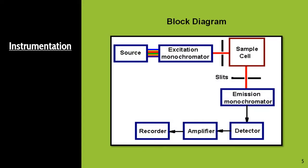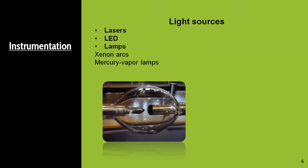Let us see the instrumentation for fluorimetry. This is the block diagram: first you can see light source, then excitation monochromator, then sample cell, then a slit, then emission monochromator, then detector, amplifier, and recorder. Here you can see two monochromators are used, unlike UV — the excitation and emission monochromator. Light sources generally used are lasers, LEDs, and lamps, including xenon arc lamps and mercury vapor lamps.